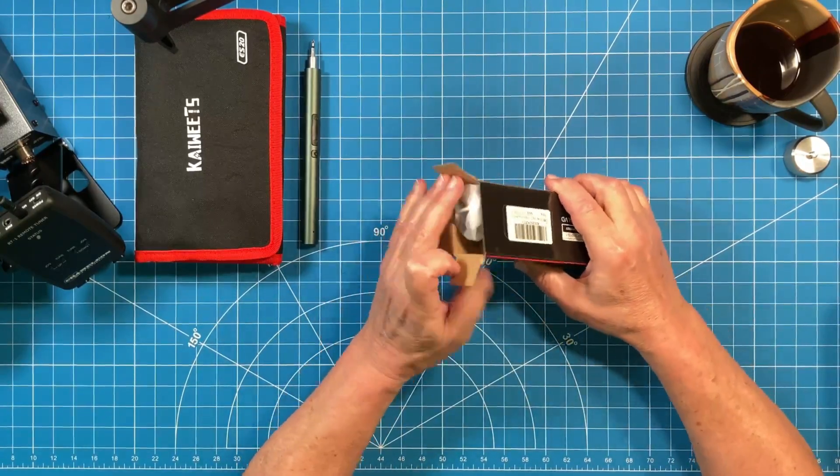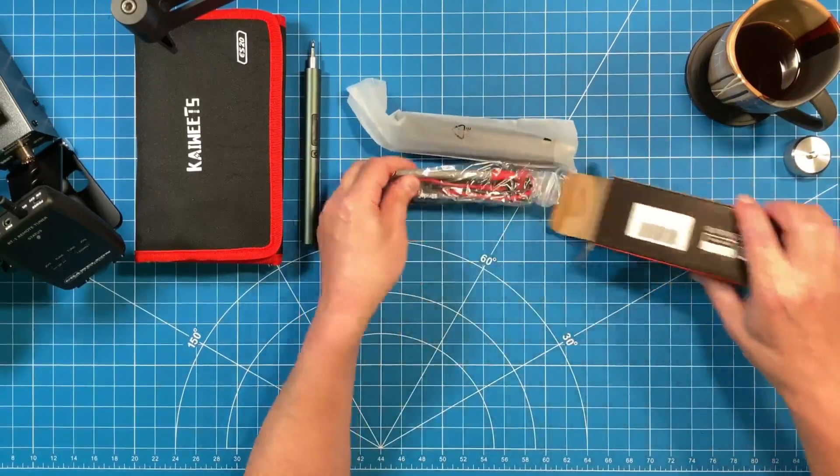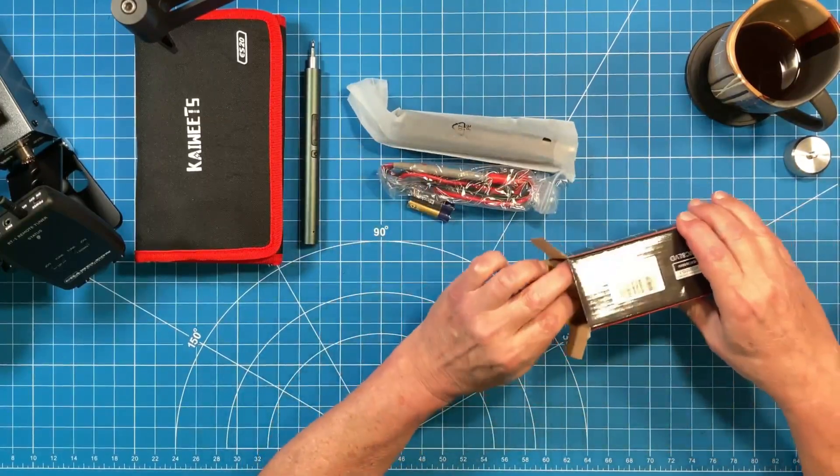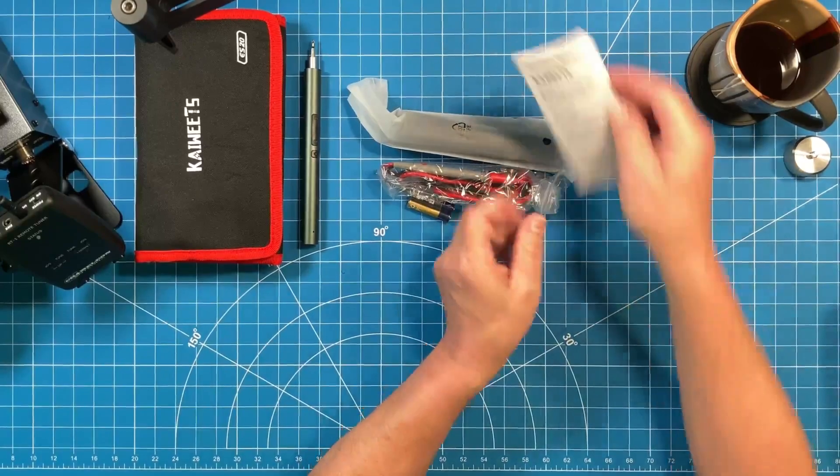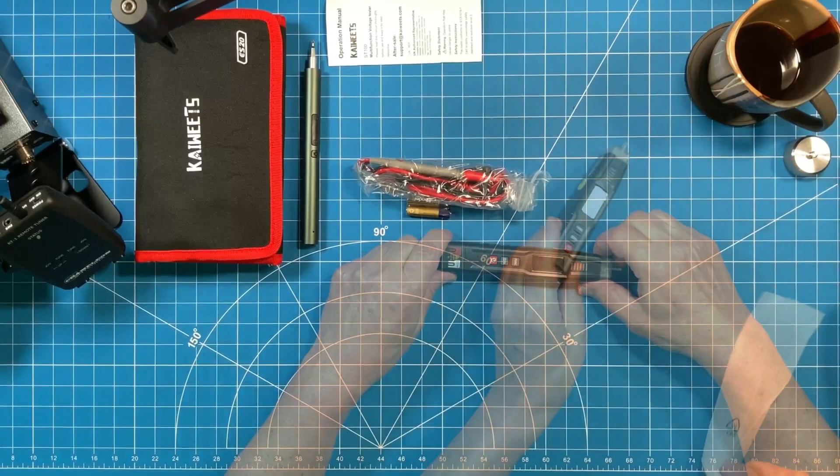You'll find exactly what you would expect in the package: the multimeter itself in a plastic protective sleeve, your probe leads, a pack of batteries, and an instruction manual that is simple but sufficient to help you understand the features in use.